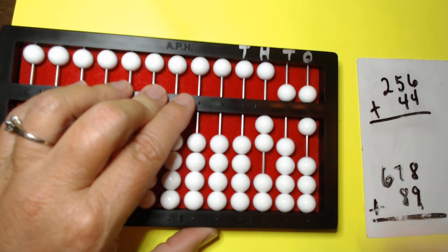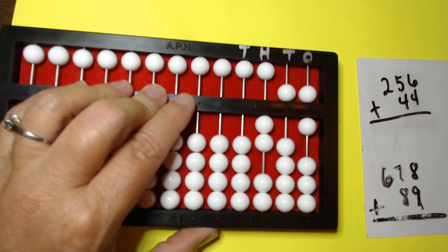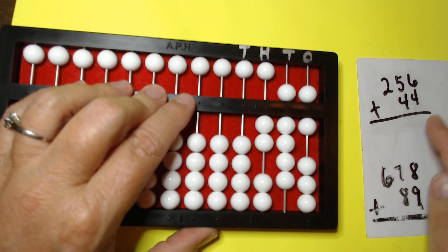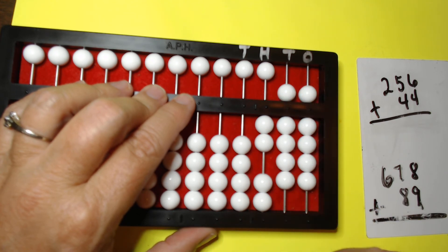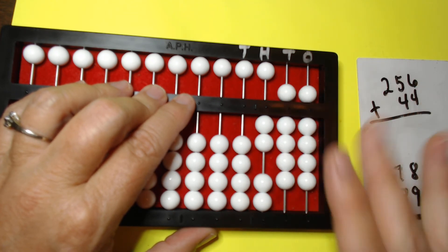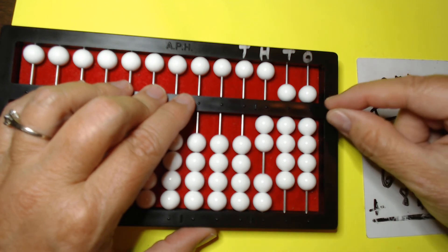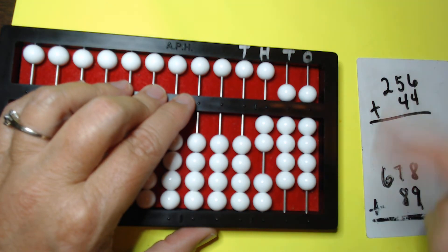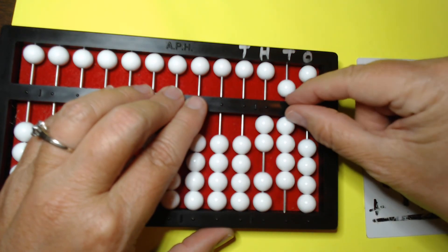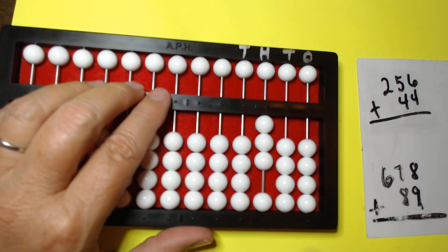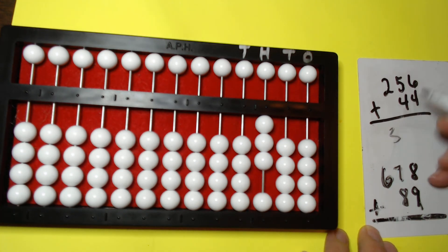We're going to set 256. And we're going to add 44. First 40 is easy. We just push up the 4. Now we have to add 4 down here. Let's count. 1, 2, 3. We're out. And look, we have a 99. So just like when we're counting from 99, we want to go to 100. We're going to clear, clear, and then set 100 bead. Clear, clear, set 100. And so our answer is 300.